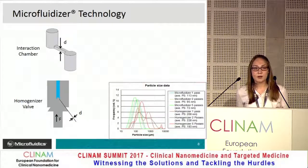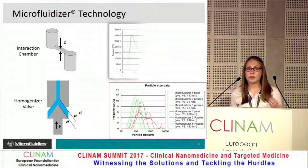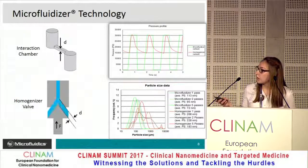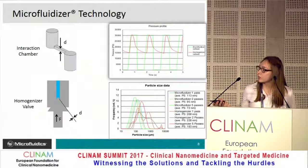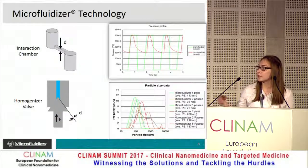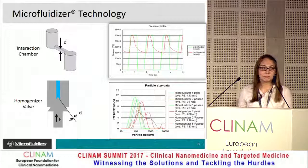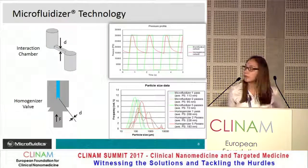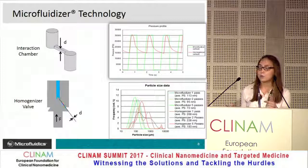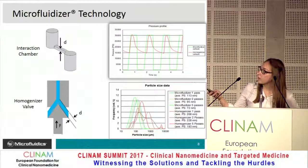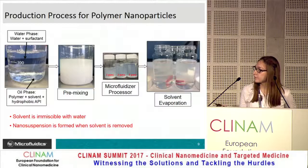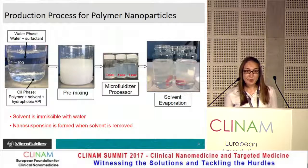Our competitors use a high-pressure homogenizer, which focuses on constant volume, while ours focuses on constant pressure. As you can see, our technology in green typically results in a normal distribution at a smaller particle size, whereas the high-pressure homogenizer produces bimodal or trimodal distributions with larger particle sizes. This is because our chambers have a fixed geometry, ensuring all material is processed under the same conditions.